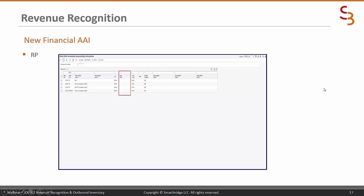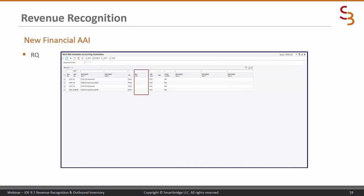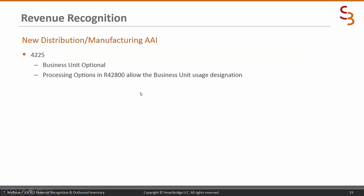RQ is the other new AAI at sequence number 3.551. Again you can use the suffix from the customer master and the business unit is optional. Here is a picture of the RP financial AAI I set up — I did not specify a business unit. For RQ I defined one for RQ blank and one for RQ base, just as I did for RP, and I left the business unit blank.